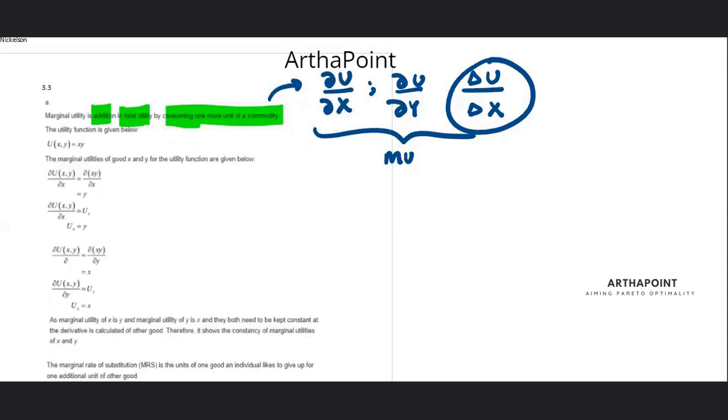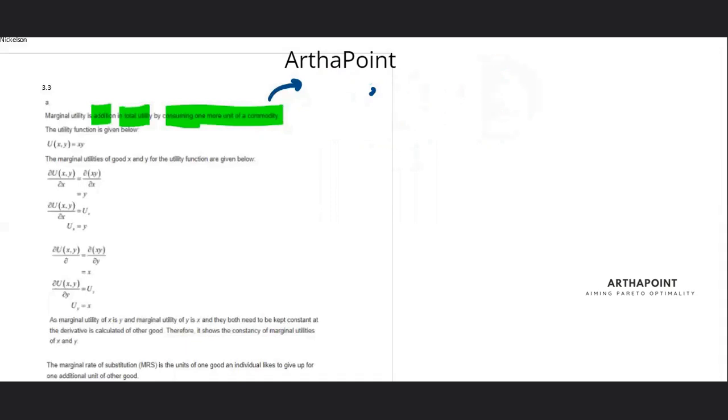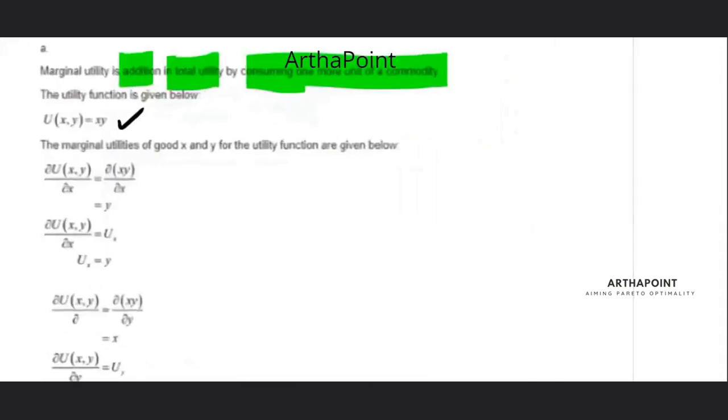Now it says find marginal utility for the following function. So let's just try and do that. If I take my first function, utility is equal to X into Y.